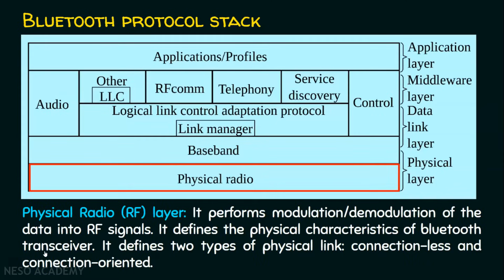The physical radio layer also defines two types of physical link. Generally in computer networks we have two types of services: connectionless services and connection-oriented services. In connectionless services, data will take any path, whereas in connection-oriented services, data will take a predefined path. We are done with the physical radio layer.